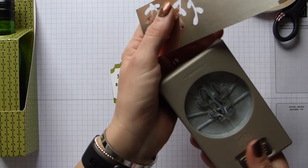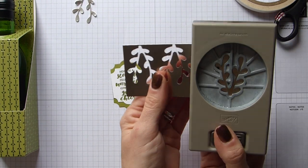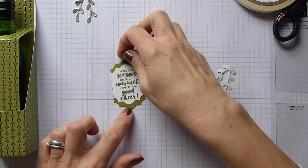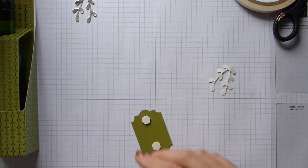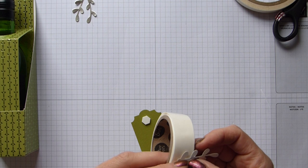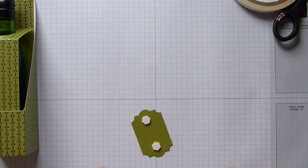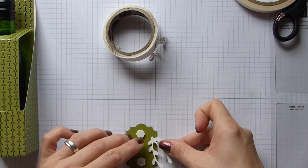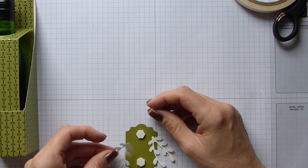I then have my sprig punch and some of the gorgeous champagne glimmer paper which I'm just going to punch a couple of those out from. On the back we're simply going to add a couple of dimensionals, glue dots to adhere my little sprigs. So one there and one there. Then these are going to go—make sure my sentiment's the right way round—these are just going to sit poking out of the side here.